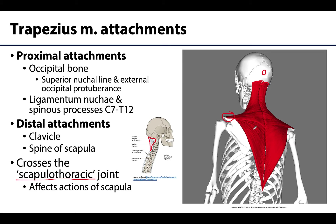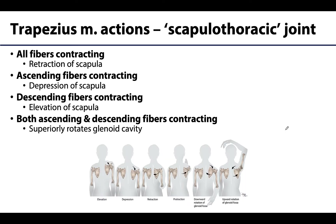There are three main directions of muscle fibers in the trapezius: the superior, oftentimes referred to as descending fibers; the middle part; and then the inferior or ascending fibers of the trapezius. You'll often see them divided in these three ways, and dependent on which fibers are contracting, this can greatly affect the actions that can occur.